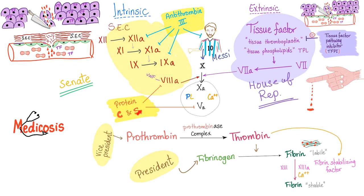The purpose of protein C and S is to inhibit factors 5 and 8. When I inhibit factor 5, I'm anticoagulation. That's why they are checks and balances — they are the brakes, not the accelerator.